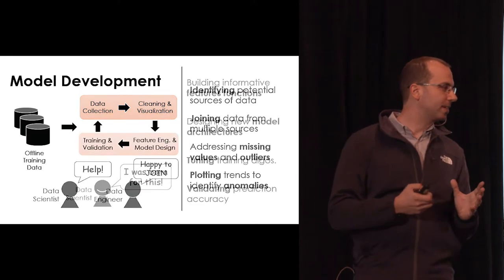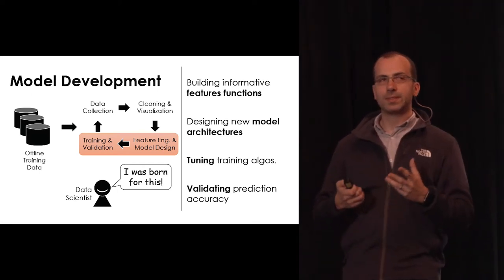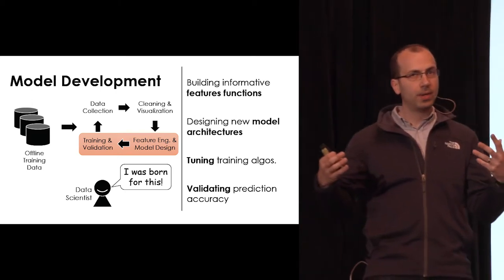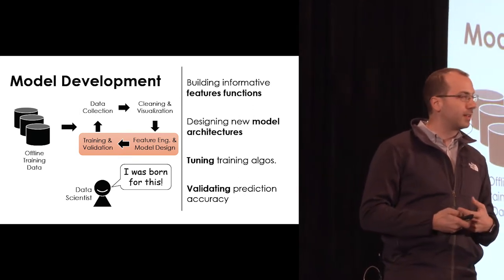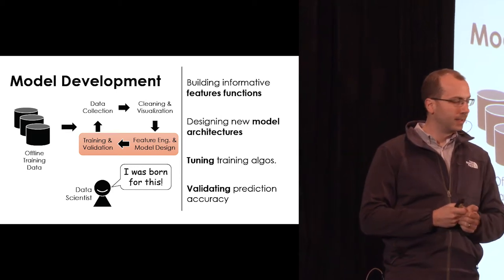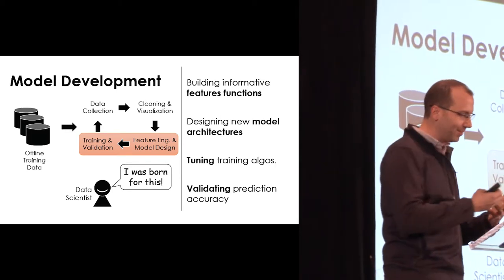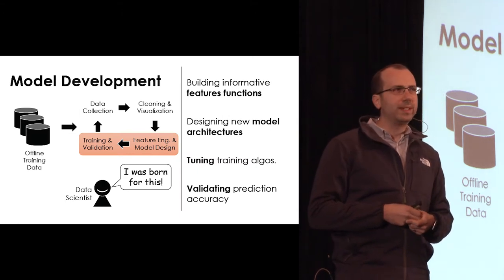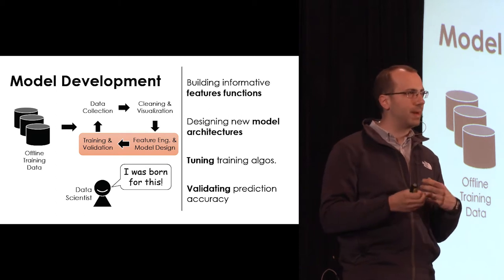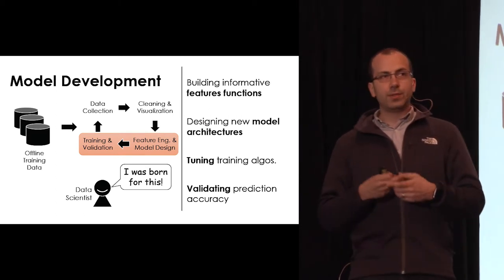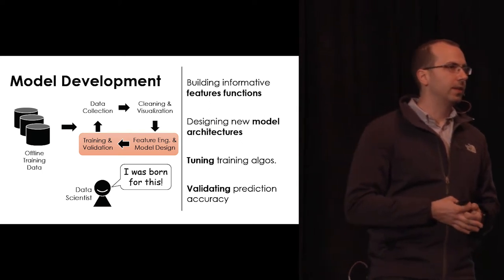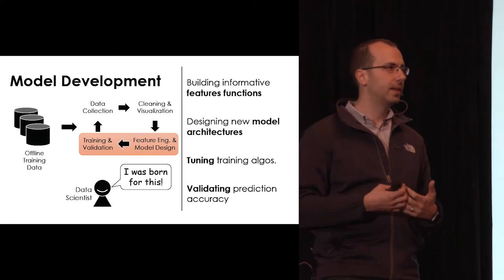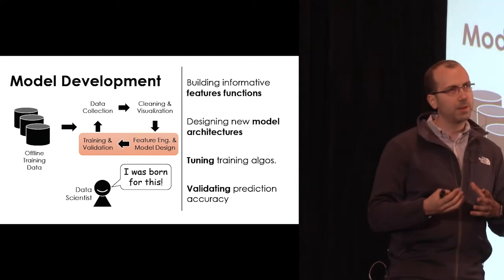Once we're done that process, we get to the more exciting part — the actual model development. We get to think about models and design new algorithms. In this process, we're building informative feature functions using our knowledge to interpret data for a model — this is getting replaced in some places by deep learning. We design new model architectures, do tuning of training algorithms, and there's an emerging space of tools to manage that tuning process. We often need to do validation: is the model accurate enough? Is it fast enough? Will it be accurate tomorrow? How do we check these things in a more principled way?